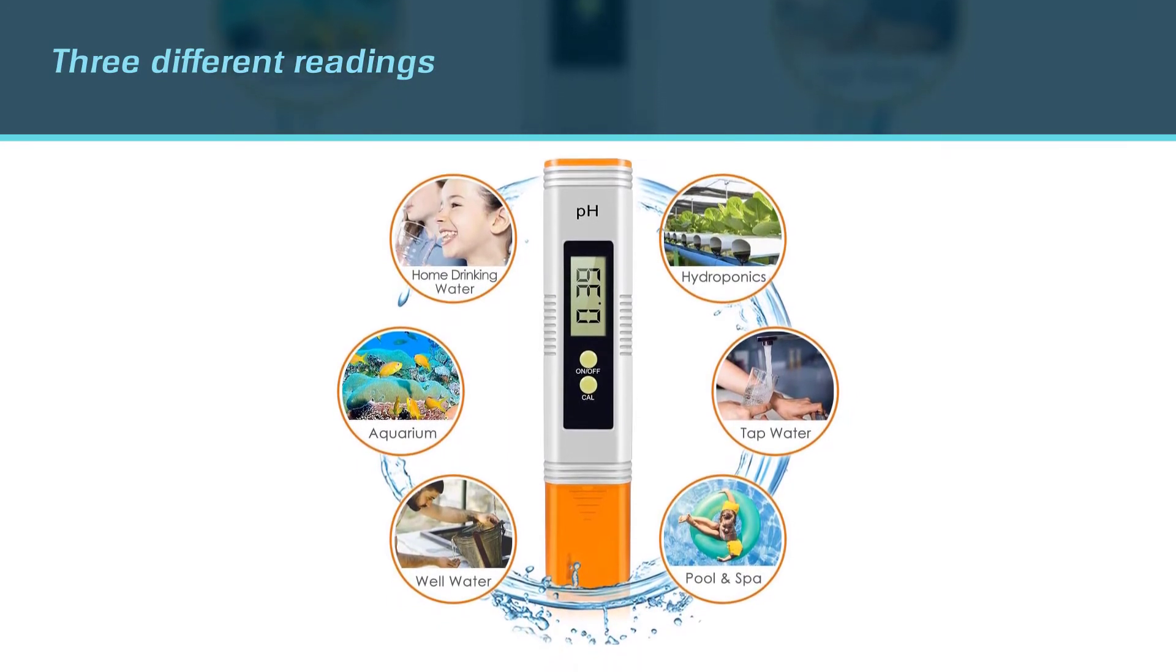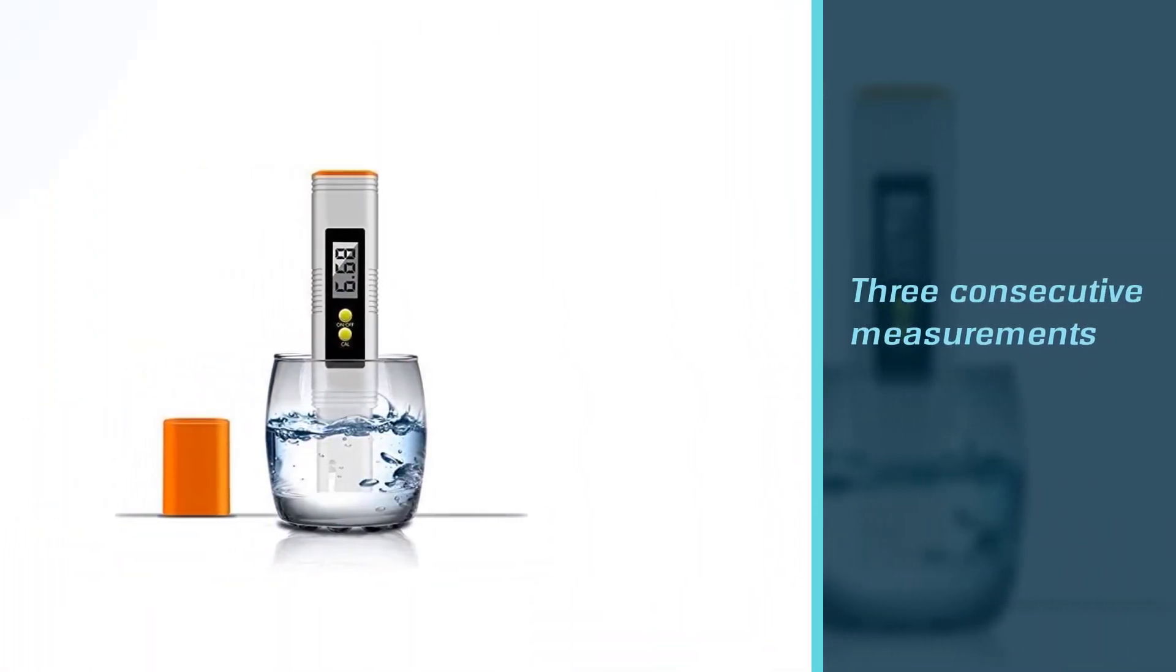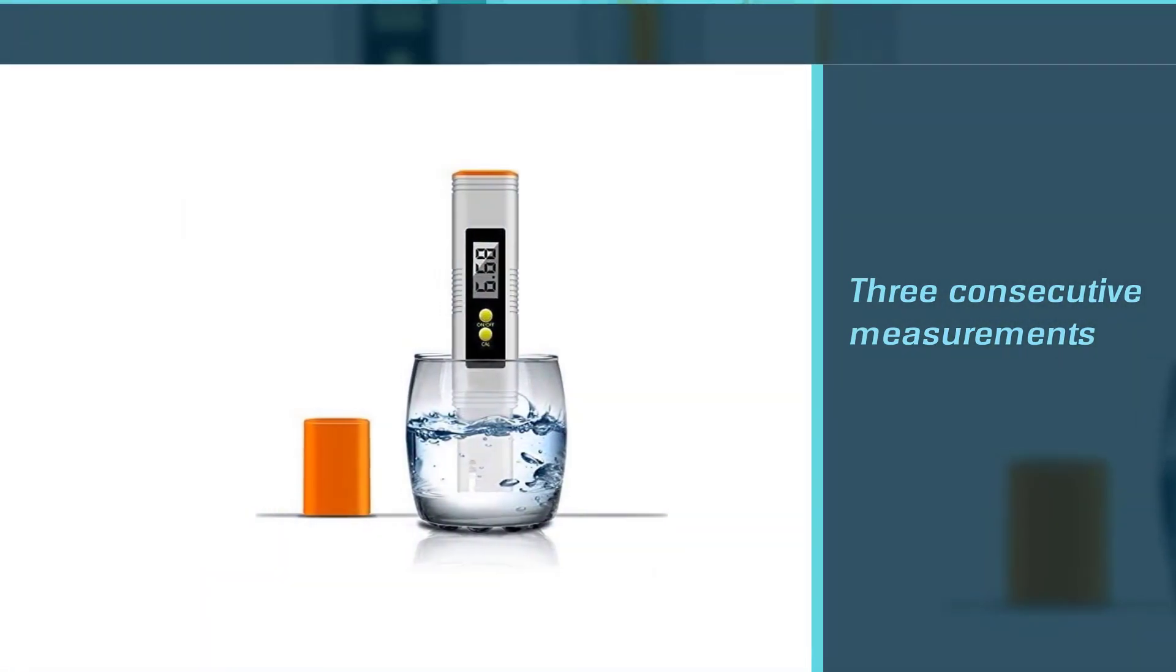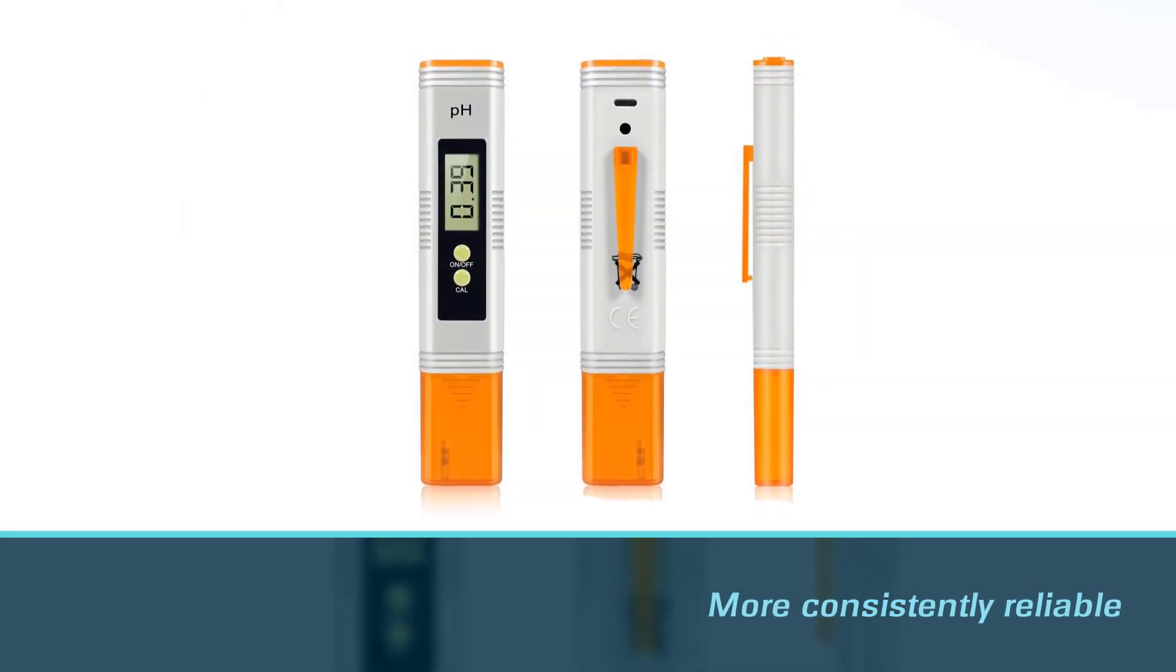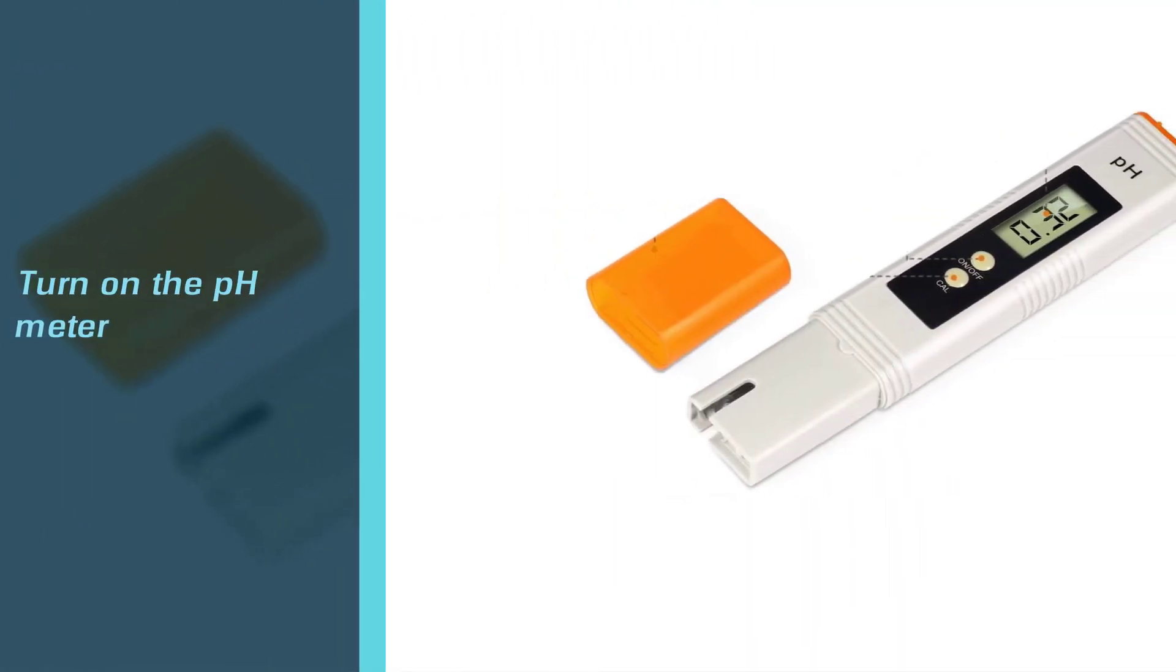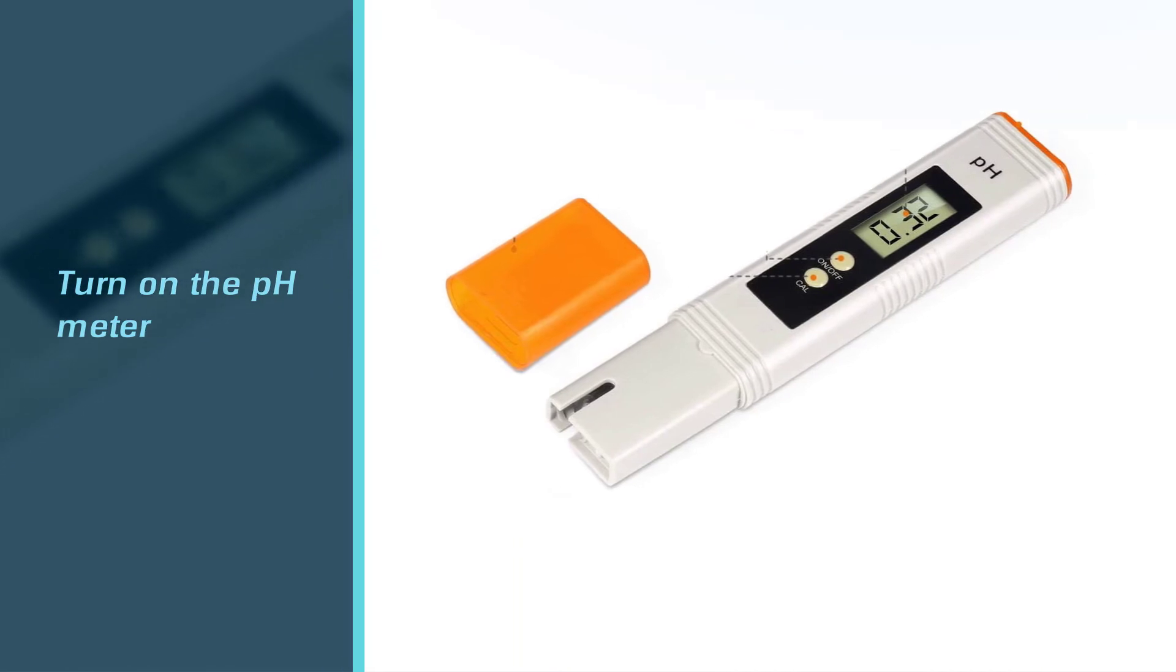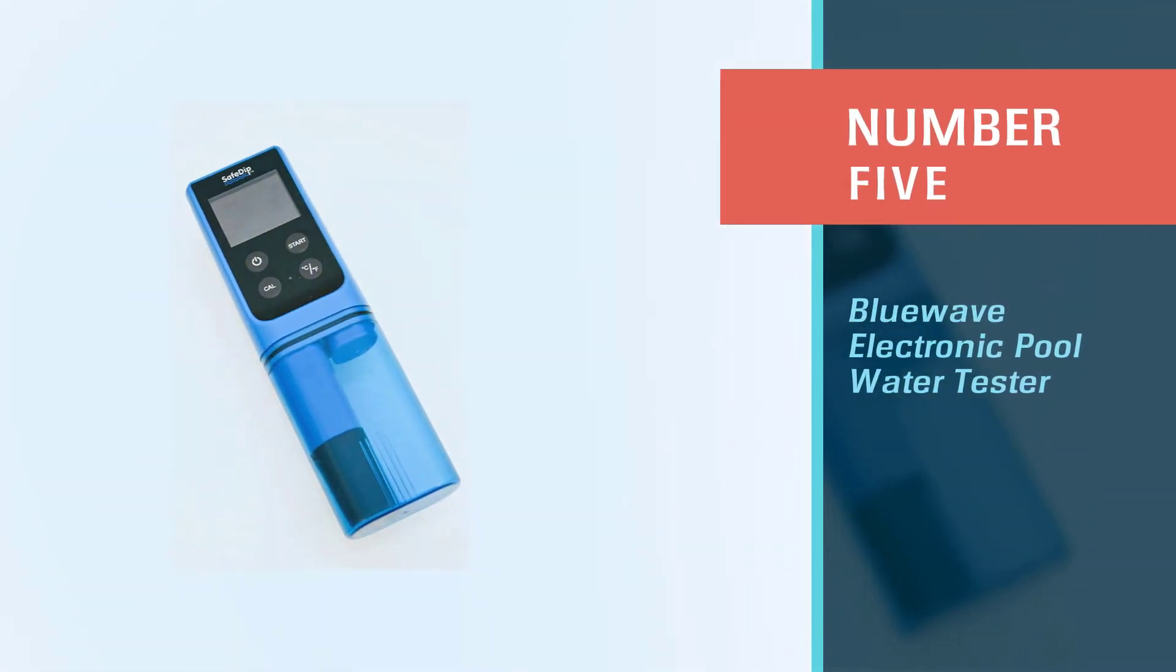It comes with automatic temperature compensation, which is a really valuable thing to get at this price point. This meter has inconsistency problems—some units report three different readings on three consecutive measurements, which makes it hard to know what your pool really needs.